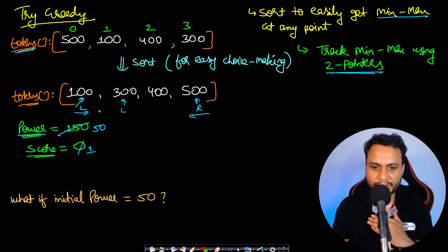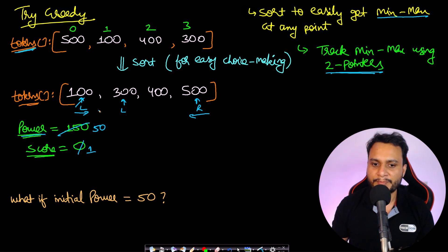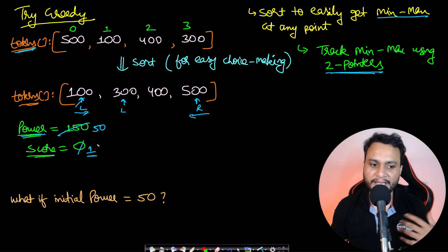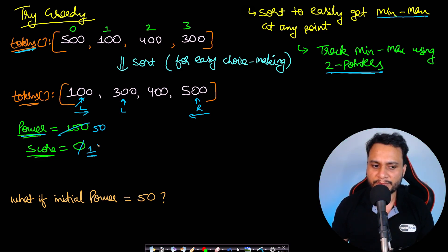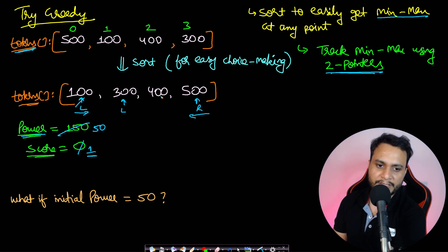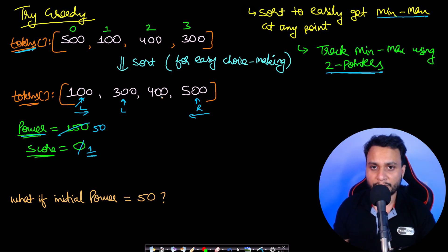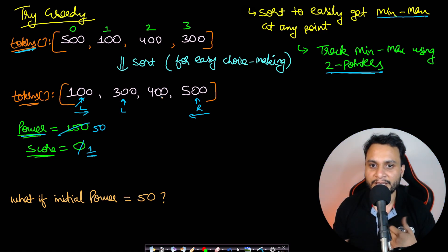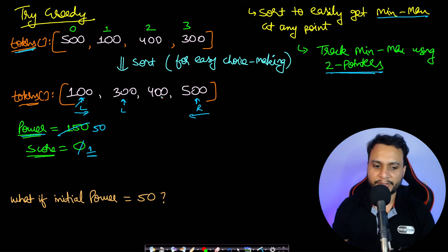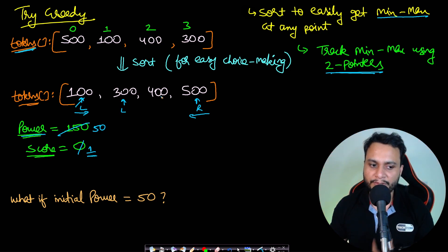Now power is 50 and the left token is 300 — 50 cannot cover 300. If it can't beat the minimum it can't beat anything, so instead we spend score to gain maximum power. We look at the right pointer: spending one score gives us 500 power, making total power 550. We decrement the right pointer.